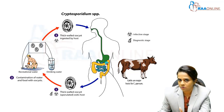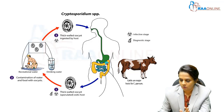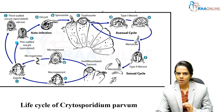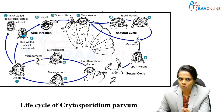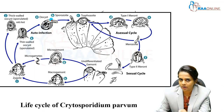First it undergoes schizogony, then gametogony, then sporogony releasing the oocysts. The oocysts — first the thick walled form — undergo excystation in the small intestine.